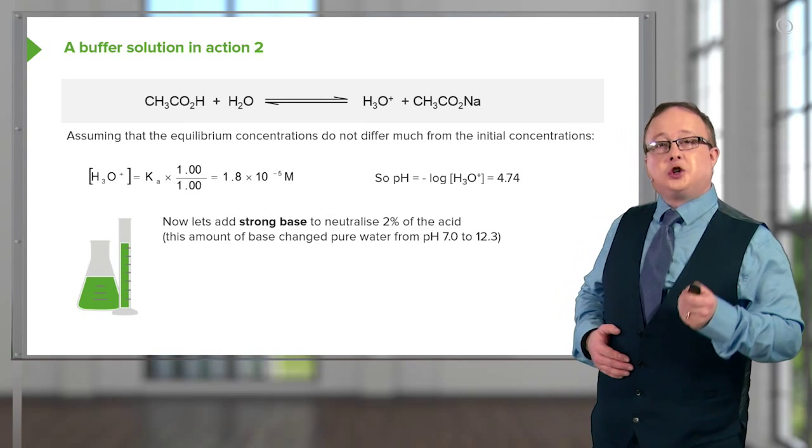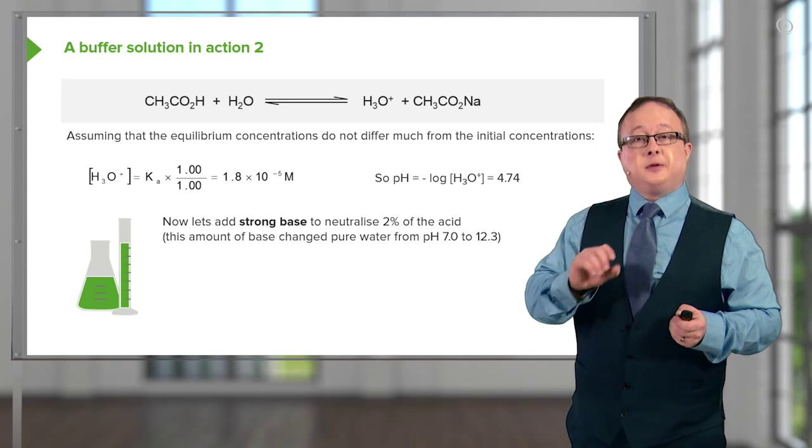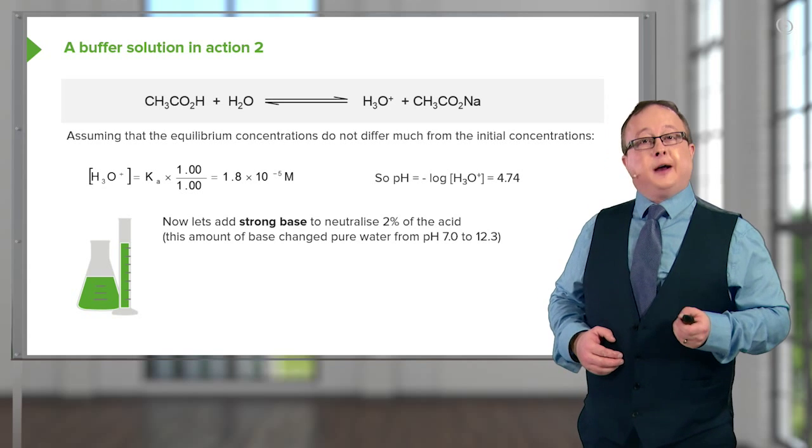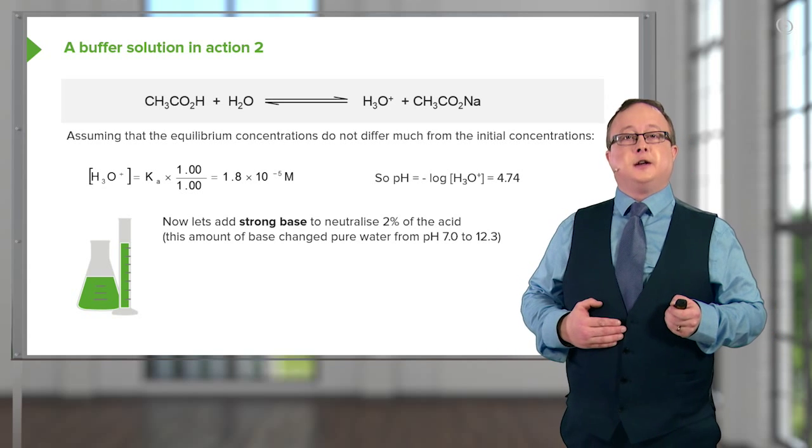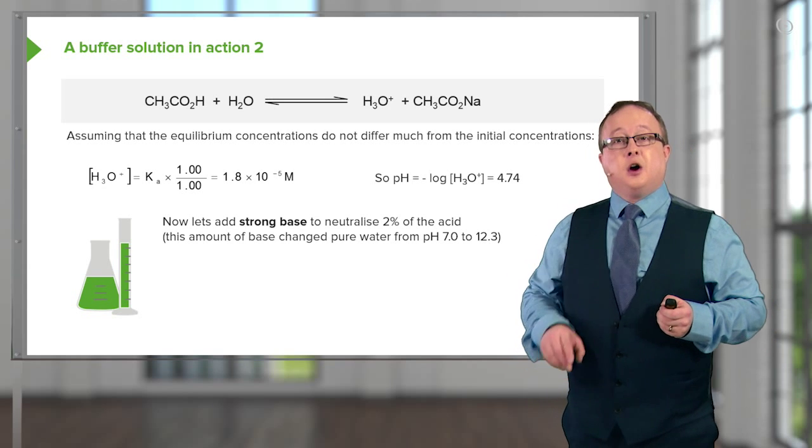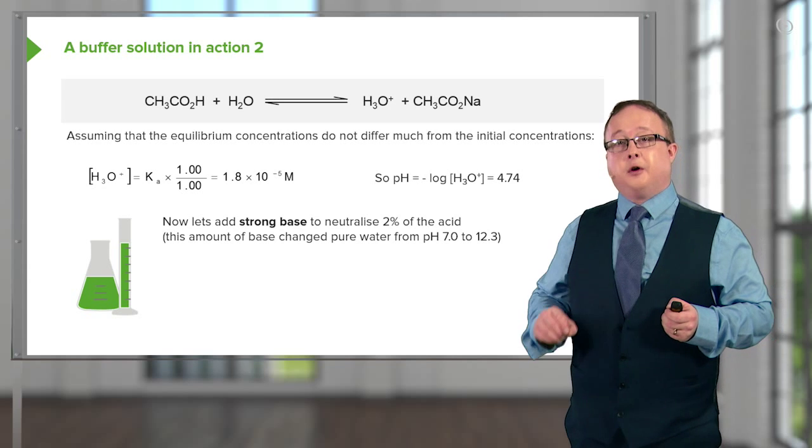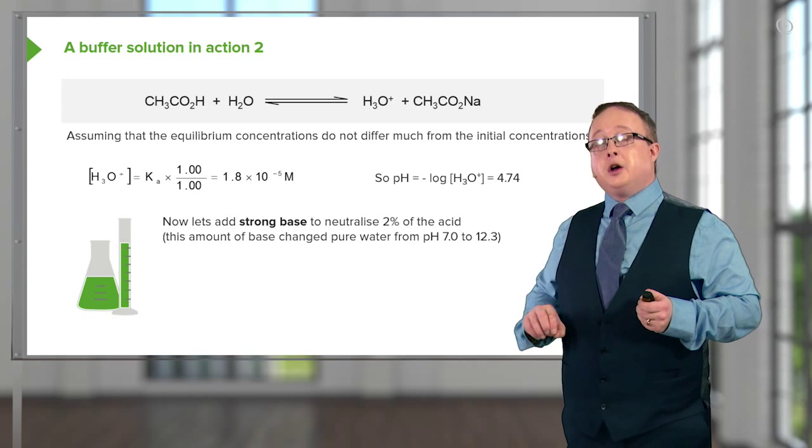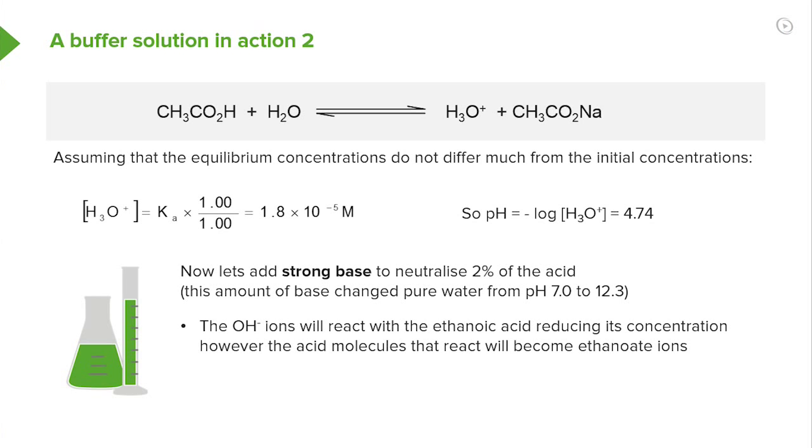Now let us add a strong base to neutralize 2% of the acid. So we'll add a strong base, we know it's going to be completely dissociated into, let's say, sodium hydroxide: Na+ and OH-. This amount of base changed the pure water as we saw earlier on the scale from pH 7.0 to 12.3. The OH- ions will react with the ethanoic acid reducing its concentration. However, the acid molecules that react will become ethanoate ions. In buffers, the neutralization of one buffer component converts it to the other.